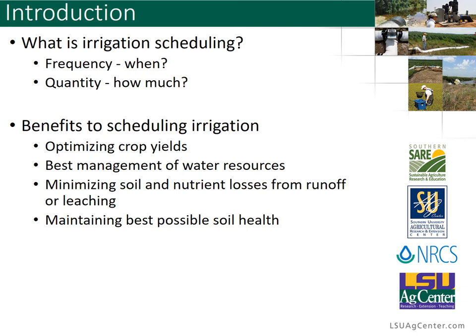The benefits to scheduling irrigation are very plentiful, but just the few major ones include optimizing your crop yields, because crops can suffer from too much or too little irrigation. You have the best management practices of using our available water resources. You're also minimizing soil and nutrient losses from runoff or leaching, and you're trying to maintain the best possible soil health, which is very important to maintaining a good crop yield over many years.